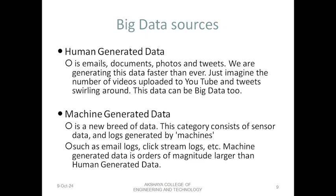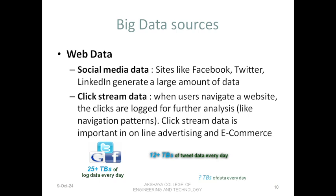Sources of big data are either human generated or machine generated. Human generated data is whatever we create through our digital devices — phones, computers, or laptops. Machine generated data includes all the logs being maintained and all the sensor data generated. Web data includes social media data and clickstream data — when users navigate a website, each click and action on a page is logged. We generate approximately 25 TB of log data every day and more than 12 TB of tweets every day.